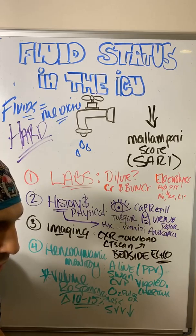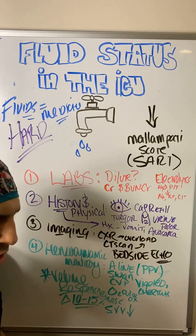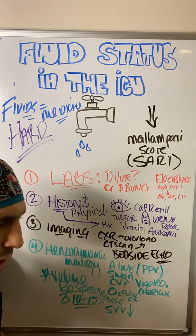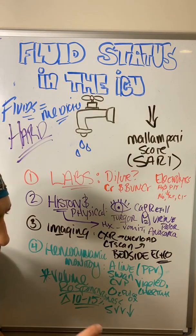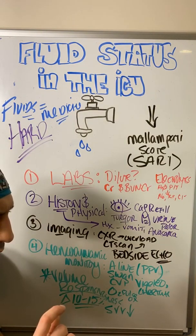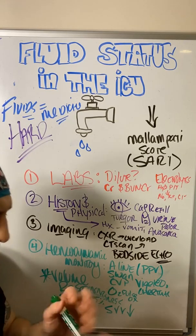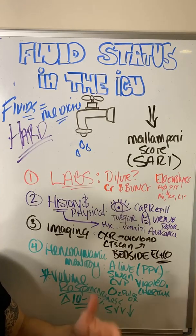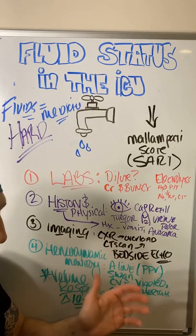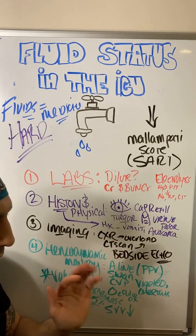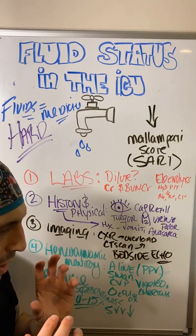Cardiac ICUs are moving away from Swan-Ganz catheters these days. There was a paper I believe from last year showing that Swans did change outcomes in heart failure. People stopped using Swans partly because of an older study that said they didn't change outcomes — but my issue with that is the Swan is fundamentally a monitor, not a treatment.